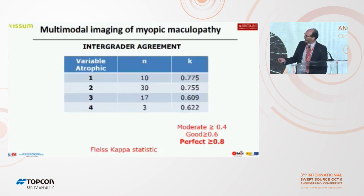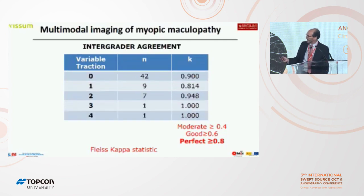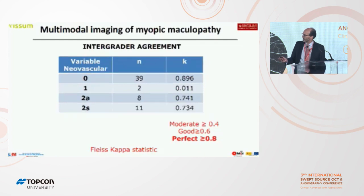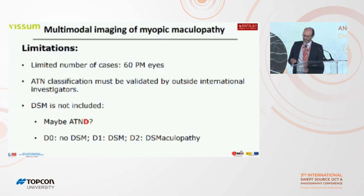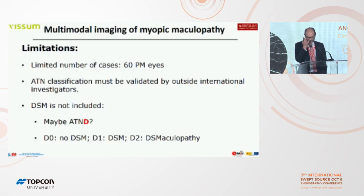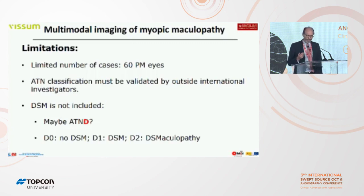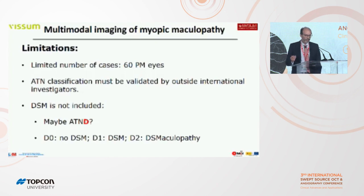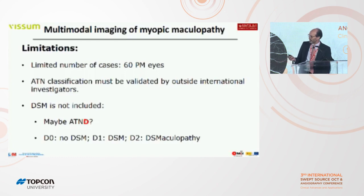These are the results for the different variables: atrophic lesions at levels one through four, traction, and neovascular. The limitations of our study: only 60 cases have been studied, and the ATN classification must be validated not only by our researchers but also by outside international investigators. Our classification does not currently consider the dome-shaped macula — probably adding one more letter, D, with D0 (no dome-shaped macula), D1 (dome-shaped macula), and D2 (dome-shaped maculopathy), would improve our classification.